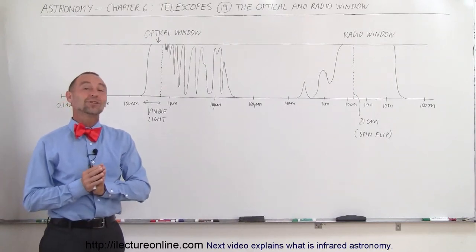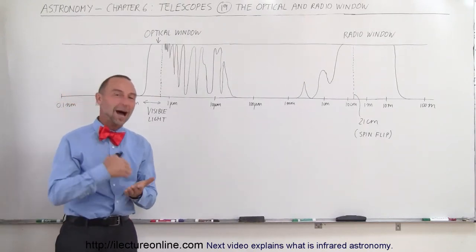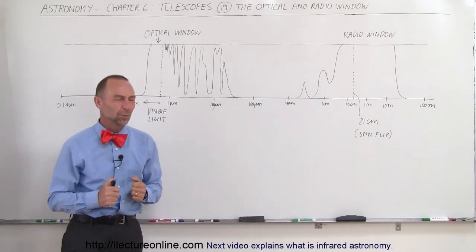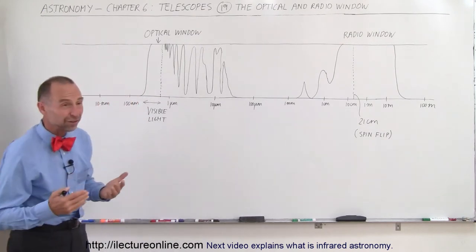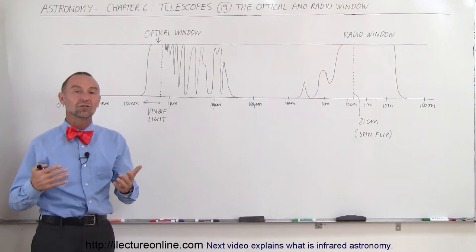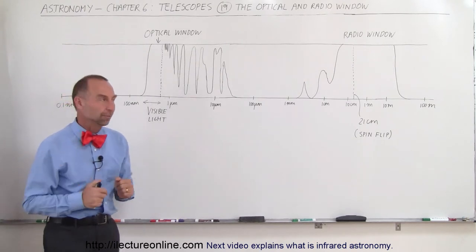Welcome to ElectronLine, and now we're going to introduce you to what we call the optical and radio window. What do we mean by that? Well, our atmosphere is opaque to many of the radiations in the electromagnetic spectrum.